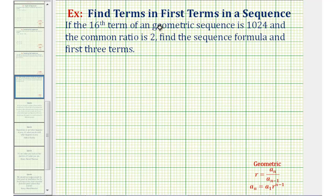So because we're told this is a geometric sequence, we know the sequence formula must be in the form of a sub n equals a sub one times r raised to the power of n minus one.